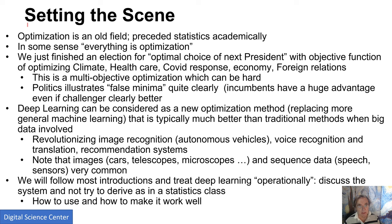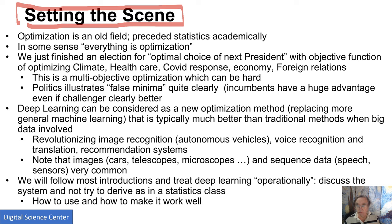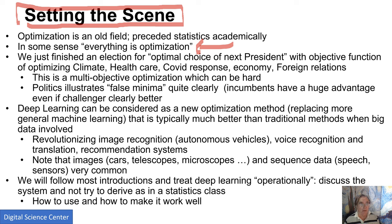First we set the scene quite broadly. When it comes to optimization, it's a pretty old field — it preceded statistics academically and was mainly for industrial problems. You can say everything's an optimization. When you make decisions at the beginning of the day, or even life-forming decisions, you're optimizing something: your happiness, your money, whatever you happen to be optimizing at the time.